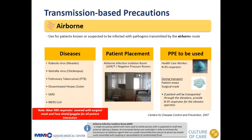Since these diseases can be transmitted through air, patients should be placed in a special room — an airborne infection isolation room or negative pressure room. In a negative pressure room, the flow of air is from outside to inside. When transferring patients on airborne precautions, the healthcare worker is required to wear an N95 respirator, while the patient wears a surgical mask.